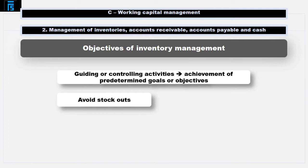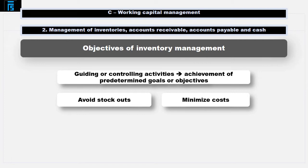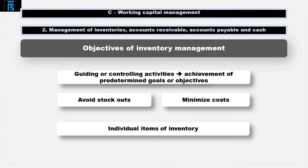One, to avoid stock-outs, and two, to minimise the costs associated with the purchasing, ordering, and holding of inventory. In order to achieve these aims, rather than thinking of inventory in total, as was the case in the Working Capital Cycle presentation, we need to think about each individual item of inventory.